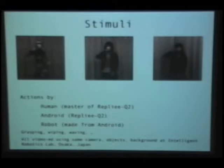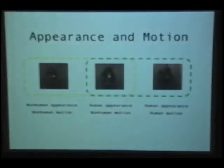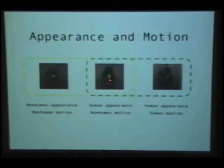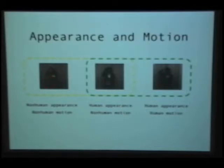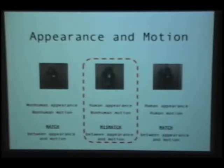We had two-second video clips of very simple actions — we started simple with this experiment, just action observation. In terms of the brain, what we're looking at is whether there seems to be selectivity for human-like appearance or human-like motion. The robot and the android share motion but differ in appearance. The android and the human share appearance but differ in motion. In one sense, the robot and the android are maximally different from each other, but in another sense they're similar — both agents have a match between how they look and how they move. The android is the case where you have a mismatch.